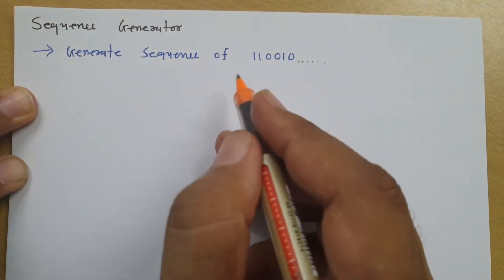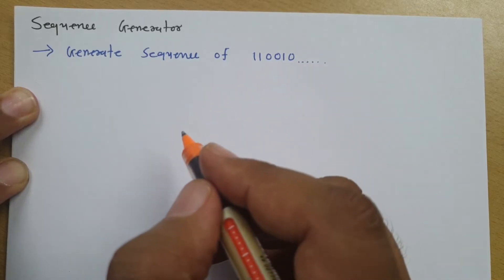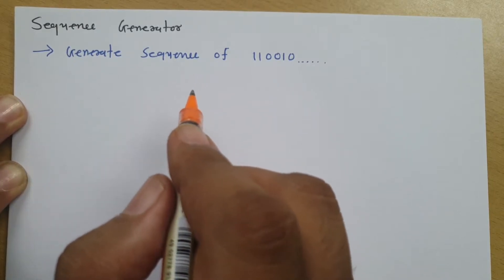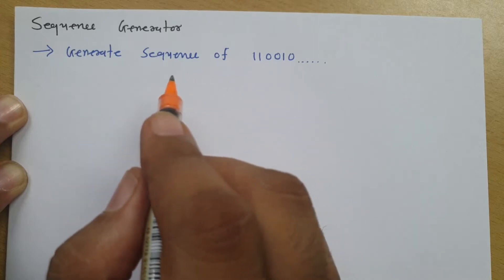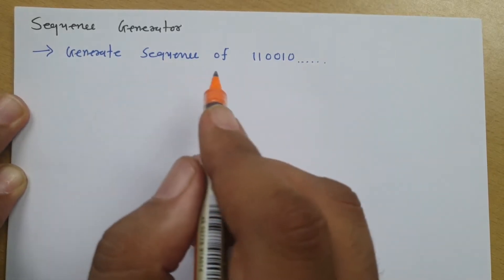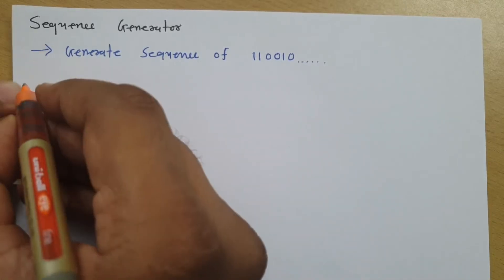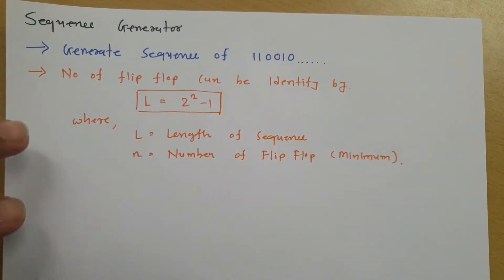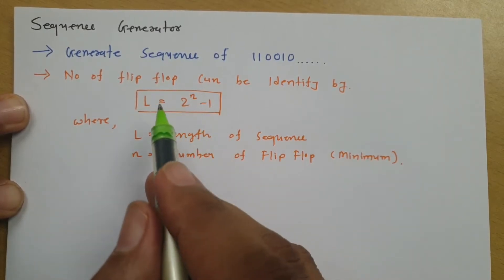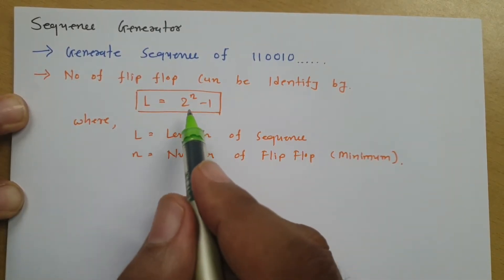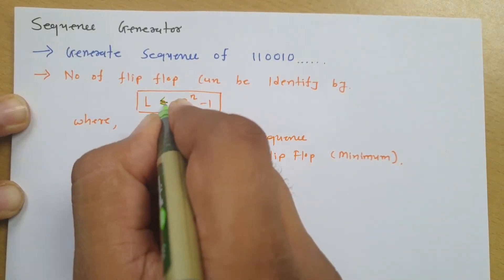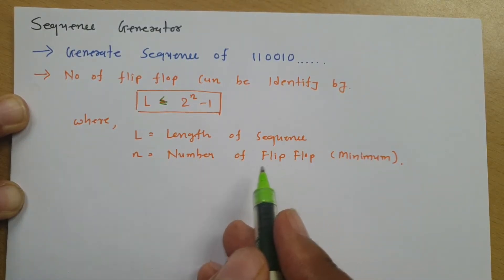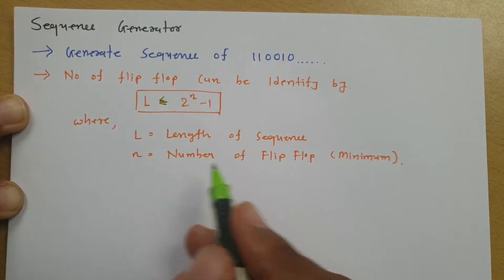The question is to generate the sequence 110010. Whenever you want to generate any sequence, first we need to identify how many minimum flip-flops are required. To identify the minimum number of flip-flops, there is one basic condition: l ≤ 2^(n−1), where l is the length of the sequence and n is the number of flip-flops.